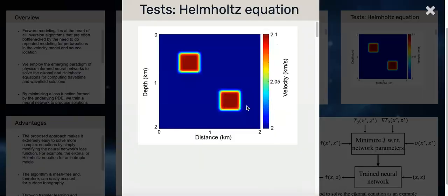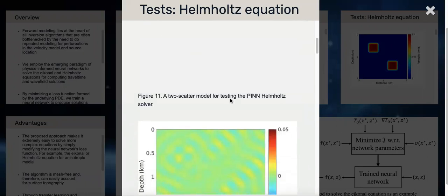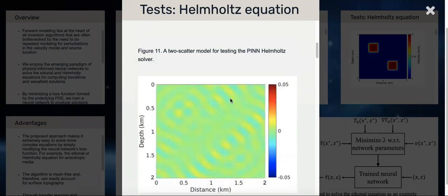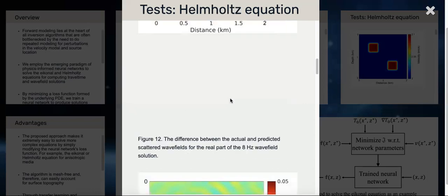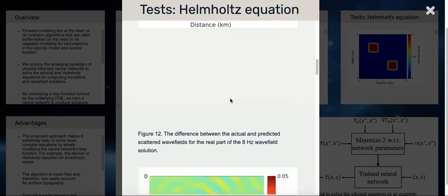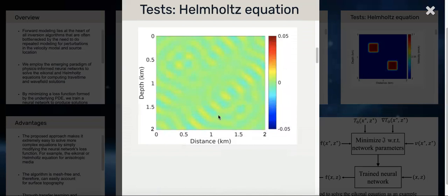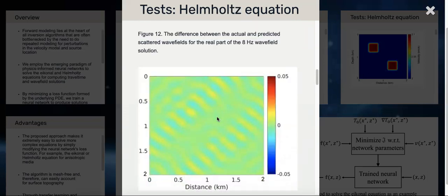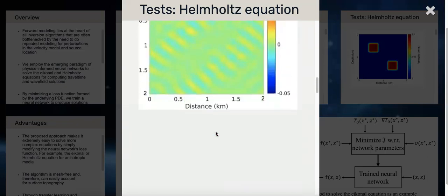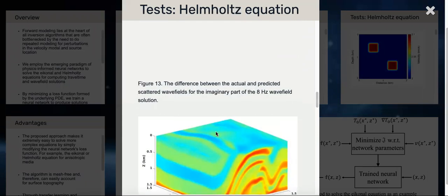Similarly with the Helmholtz solvers. We have two anomalies here in this model. Here is the difference between the actual and predicted scattered wave field for the real part of the 8 hertz wave field solution, which shows minor errors, and similarly for the imaginary part. But overall, the accuracy is pretty good.